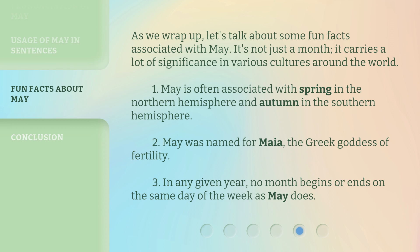As we wrap up, let's talk about some fun facts associated with May. It's not just a month — it carries a lot of significance in various cultures around the world. 1. May is often associated with spring in the Northern Hemisphere and autumn in the Southern Hemisphere. 2. May was named for Maya, the Greek goddess of fertility. 3. In any given year, no month begins or ends on the same day of the week as May does.